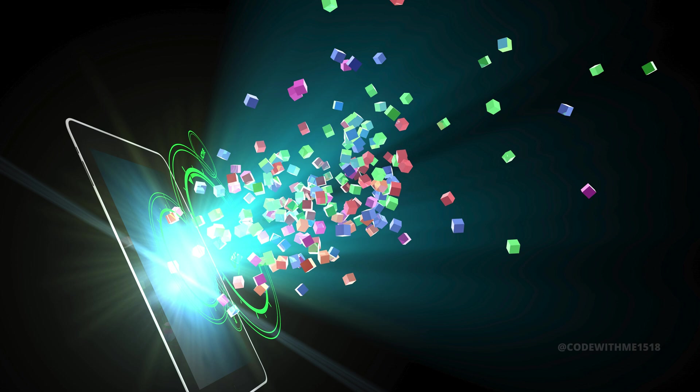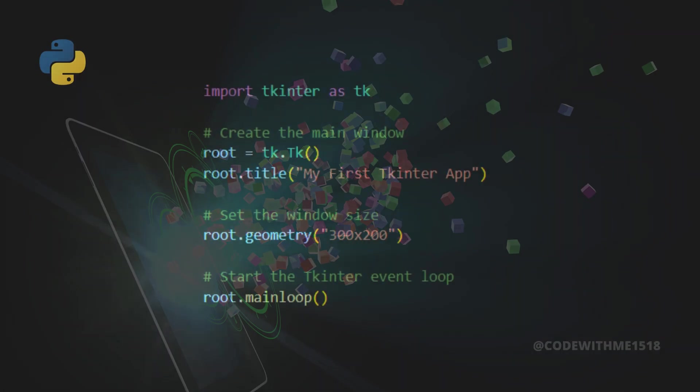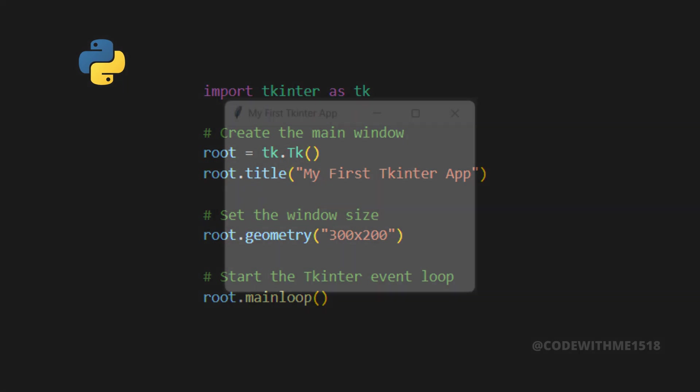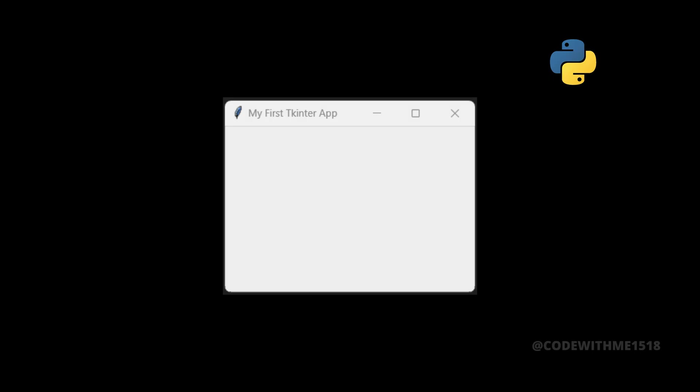Let's create our first Tkinter window — this will be the foundation of our GUI. This simple script creates a basic window with a title and specified dimensions. The root.mainloop keeps the window open and responsive until you close it.